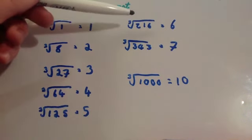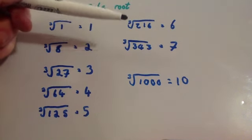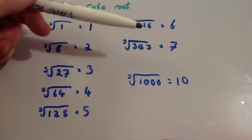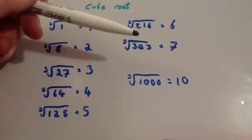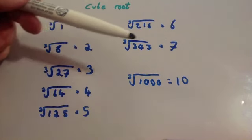The cube root of 216 is 6, because 6 times 6 times 6 is 216. The cube root of 343 is 7, because 7 times 7 times 7 is 343. And the cube root of 1000 is 10, because 10 times 10 times 10 is 1000.